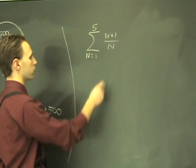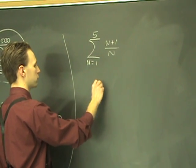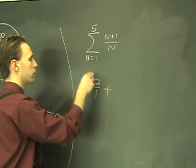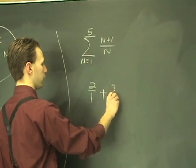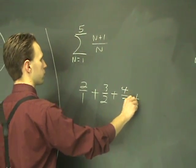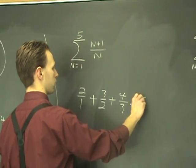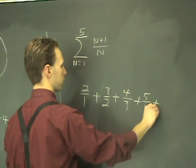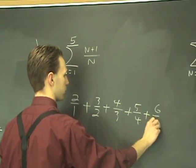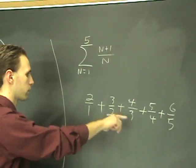Start off when n is 1, the value of the expression is 2 over 1. Then you add. Increment n by 1, and you get 3 halves, plus 4 thirds, plus, you keep on going, 5 fourths, and then you stop when n is 5. 5 plus 1 is 6 fifths. So, compact way to write this.